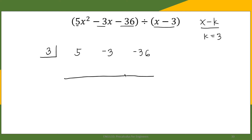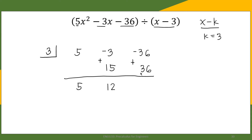The first step in synthetic division is to bring down the first coefficient: we bring down 5. Then this number is multiplied by k, so that's 5 times 3, which is 15, written below the second coefficient. Next we add: negative 3 plus 15 is positive 12. Then we repeat the process — 12 times 3 is positive 36 — and add: negative 36 plus positive 36 is 0.